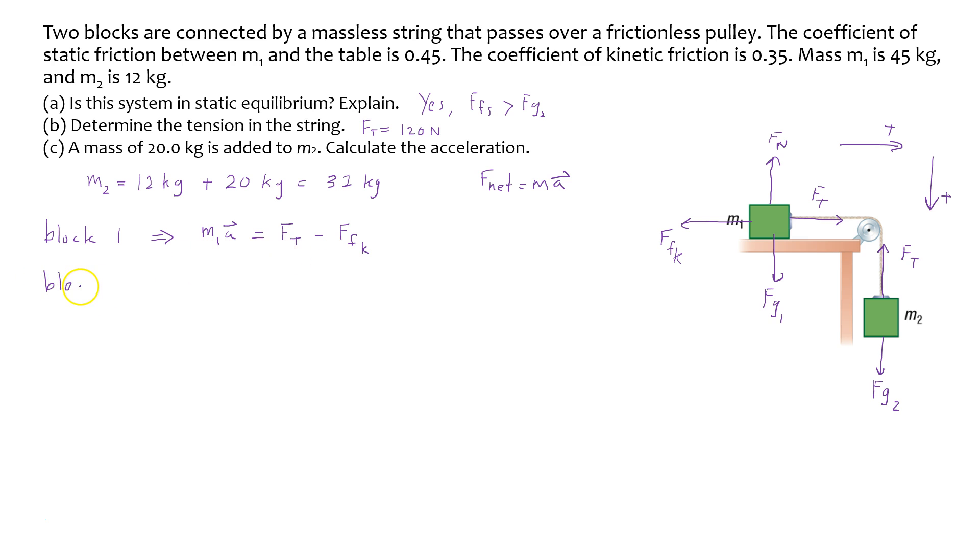For block two, we have M2 times the acceleration. Both blocks, because they're connected, should have the same acceleration. Here, because I'm treating down as being positive, I'm going to have Fg2 minus Ft.